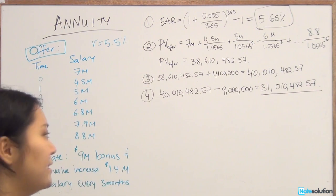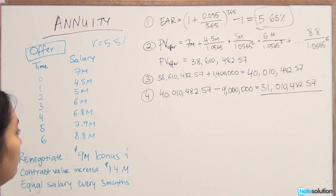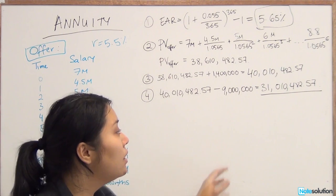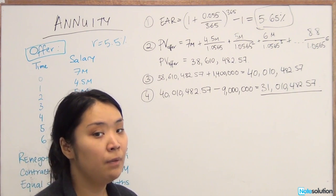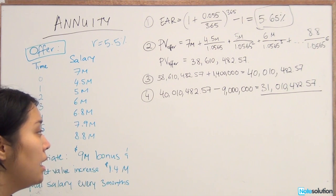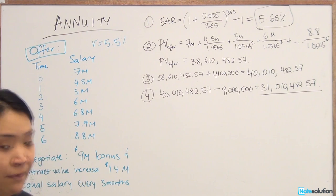So this is one of the last steps. We know that $40 million minus $9 million is $31,010,482.57. So what does that mean for us? Well, this is the amount that is going to go into the annuity. So this amount is going to be equally paid out for the next X amount of years every three months. So really, this is the present value of annuity.